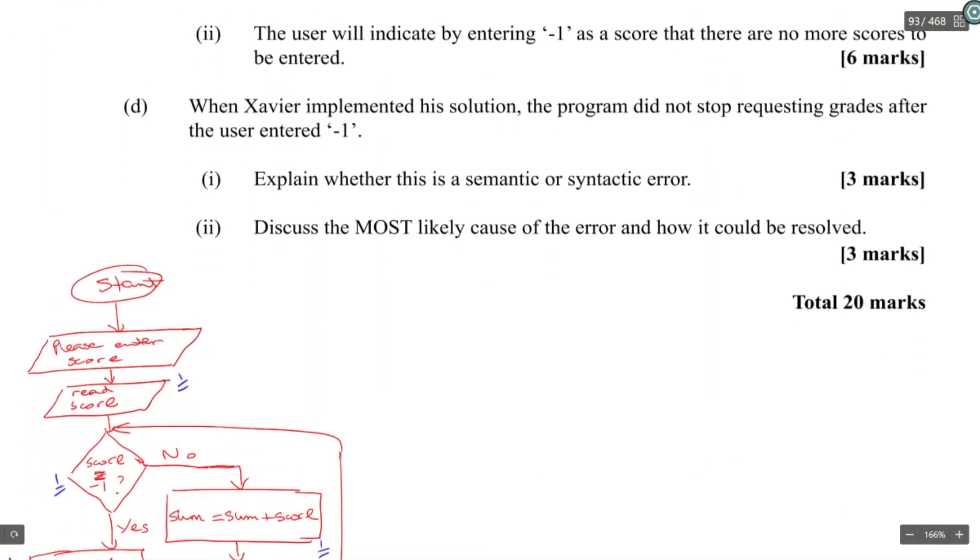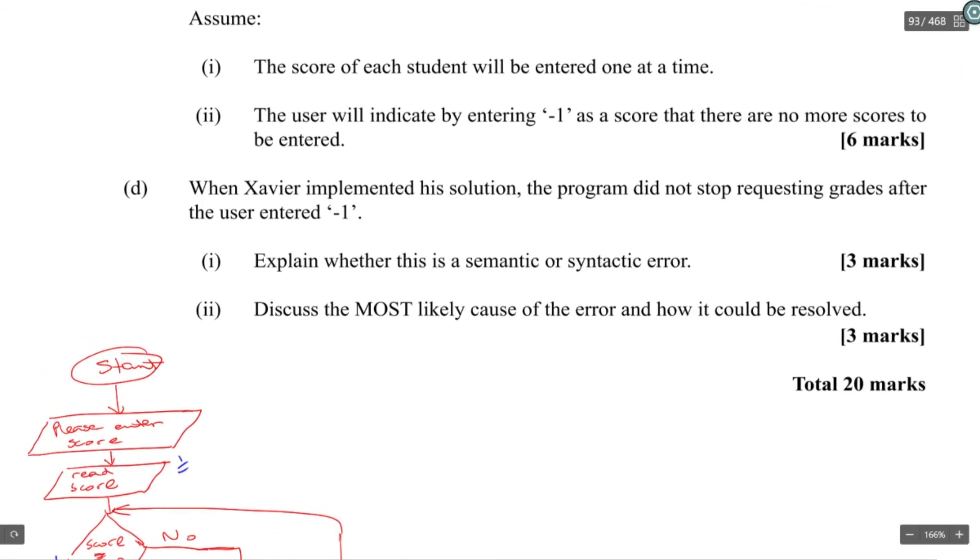All right, part D. When Xavier implemented a solution, the program didn't stop requesting grades after you've entered one. So what happened there? Type of error is a semantic error, because the program wouldn't have run if it was a syntax error. Syntax error stops the whole program from running, so the program would not have run if it was a syntax error. And it wasn't doing what it was intended to do, or what it was expected to do. Therefore, it's a semantic error because it's a logic error.